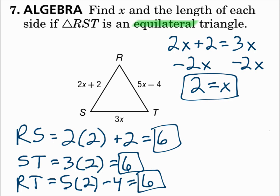It's a good way to check your work. If you substituted in and it turned out they were all different, then you knew you made a mistake. Since all sides are equilateral, pick any two, make their measures equal, and there's your equation.